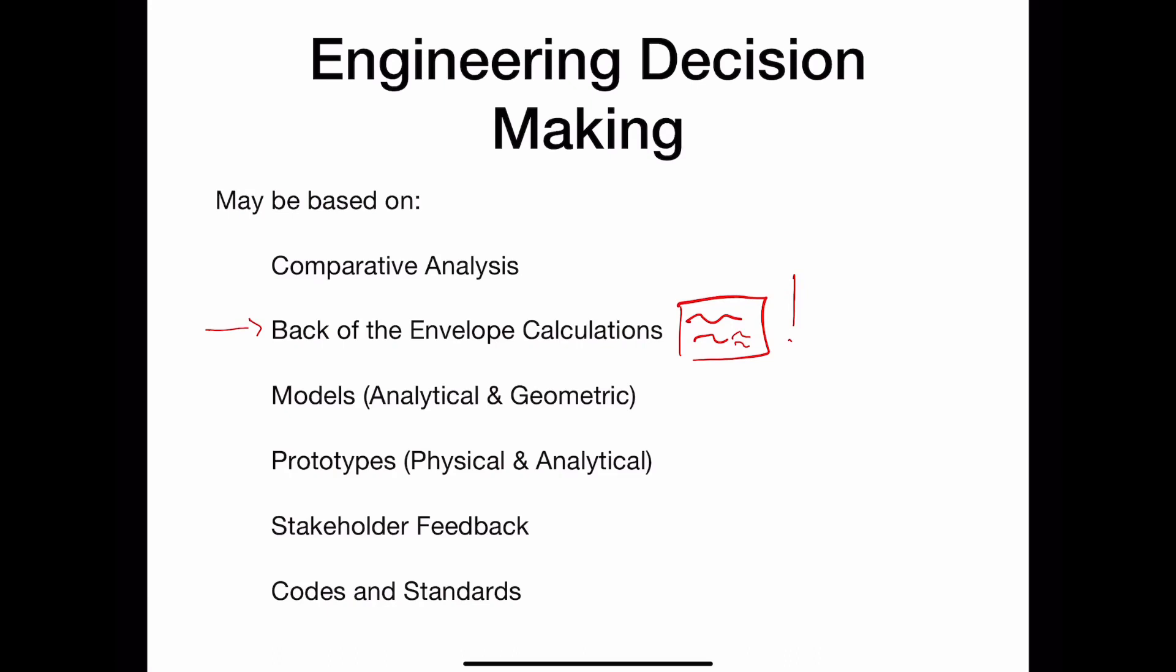Another engineering decision making process might be modeling. And so what a model is, is a mathematical representation of some system to figure out whether something is possible. These models can be mathematical or if we're talking about physical quantities, they could be geometric. So if you are sketching on paper or sketching in SOLIDWORKS, that might be a geometric model.